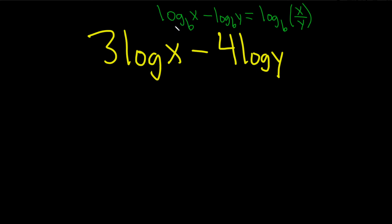You'll notice though that in the rule there's no numbers in front of the log. Here we have numbers. So we first have to use something called the power rule which basically says if you have a number in front of the log you can just bring it up. So you can just make this the exponent.